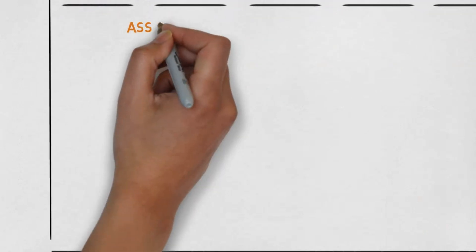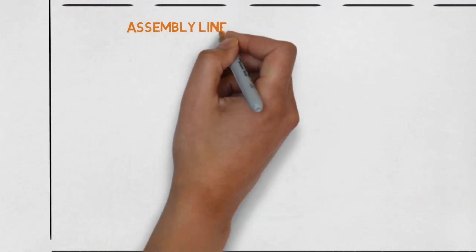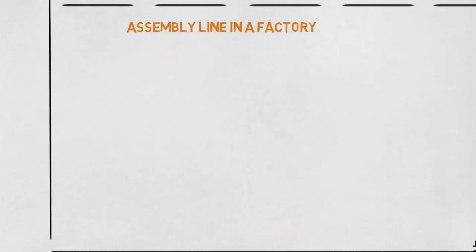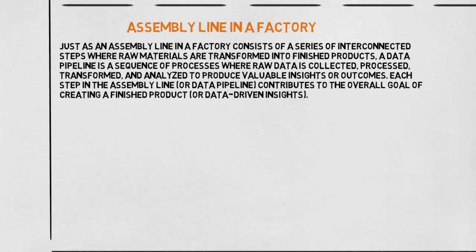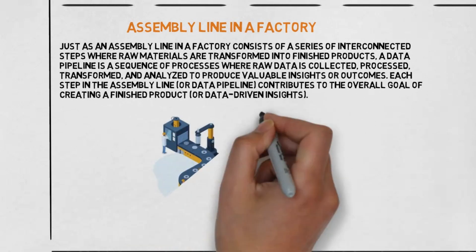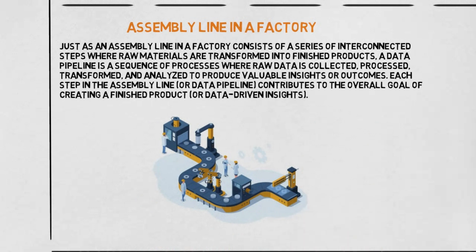Here are a few examples to help understand data pipelines. Assembly line in a factory: just as an assembly line in a factory consists of a series of interconnected steps where raw materials are transformed into finished products, a data pipeline is a sequence of processes where raw data is collected, processed, transformed and analyzed to produce valuable insights or outcomes.